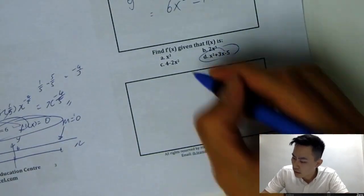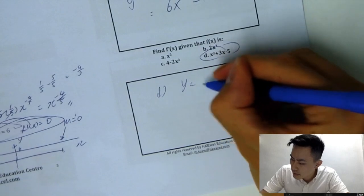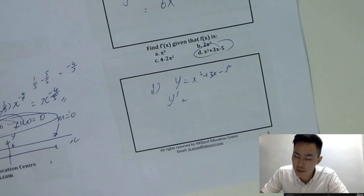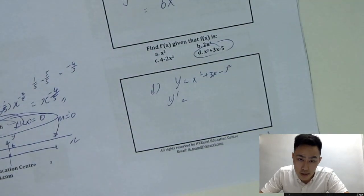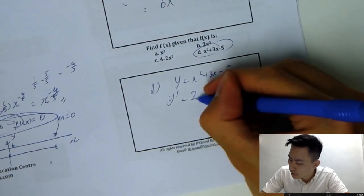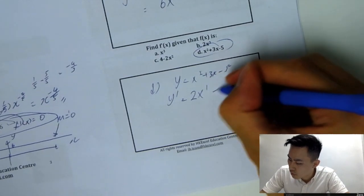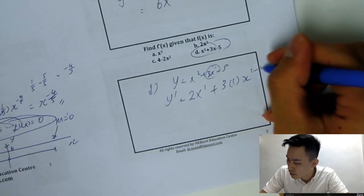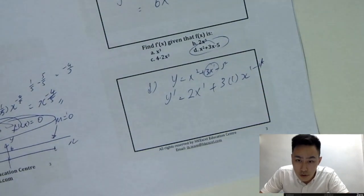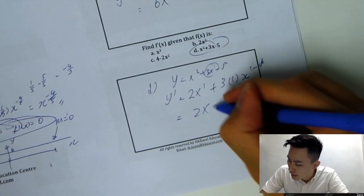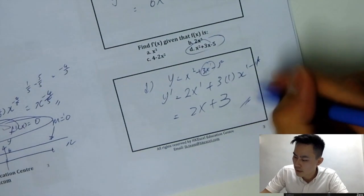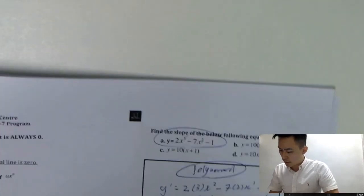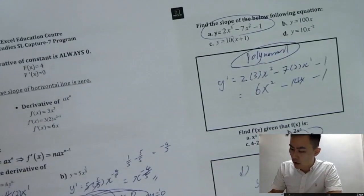So let me do one more question for you. Question D. So y is equal to x squared plus 3x minus 5. So differentiation of the polynomials, just differentiate this separately. So we multiply by the power, and then power minus 1, plus this one multiply by the power, and then power minus 1, 1 minus 1, right? So that would be 0. So then finally, we'll have 2x plus 3. Because x power 0 is just 1. So that's it. So this is differentiation of the polynomials.